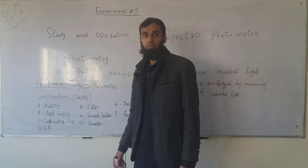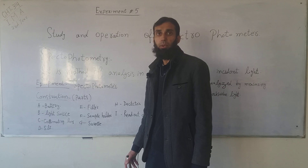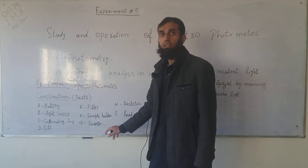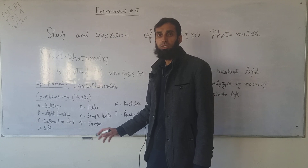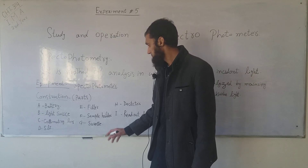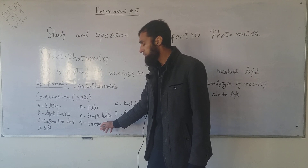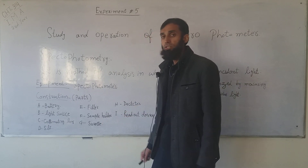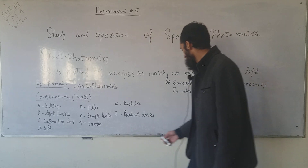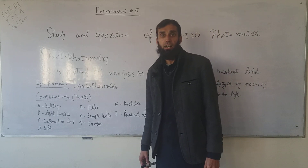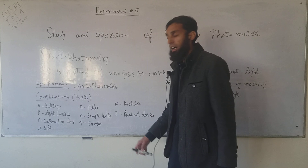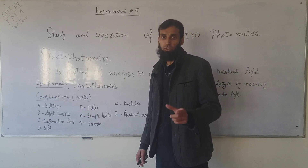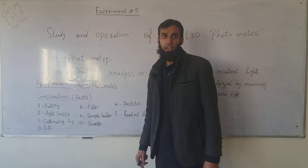Different wavelength filters can be used in the sample compartment. There is a sample holder, which holds the sample tube. The detector detects the incident light, and the current signal is sent to the reader. The reader shows the reading on an LCD display.